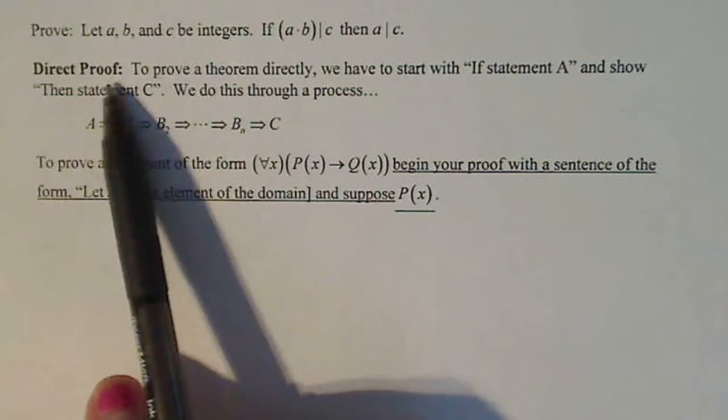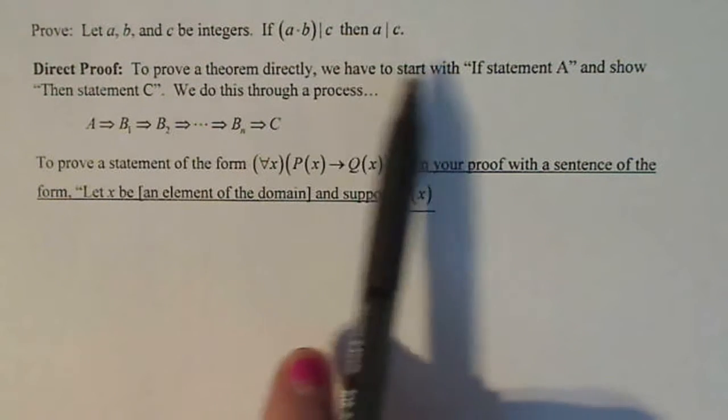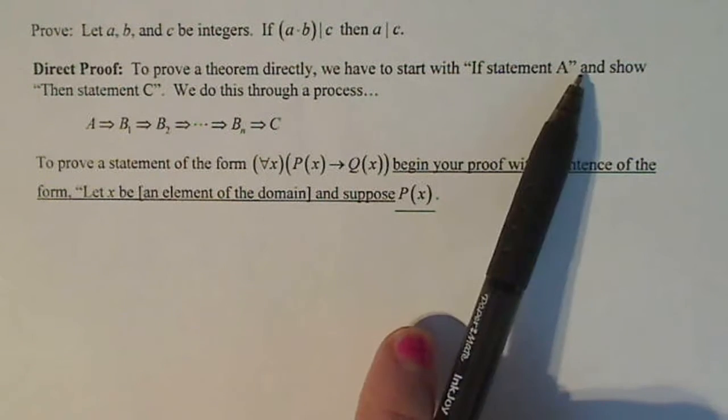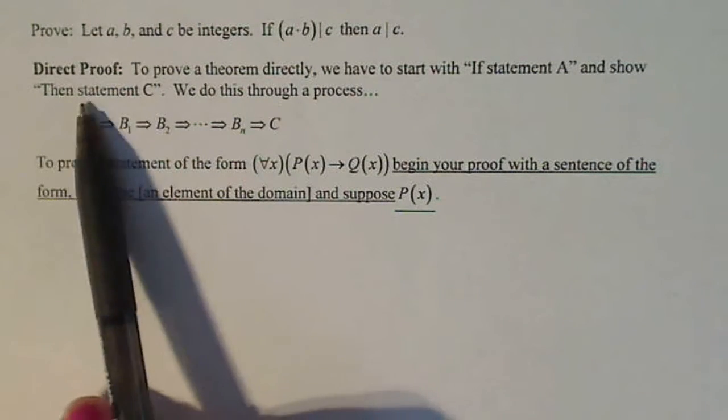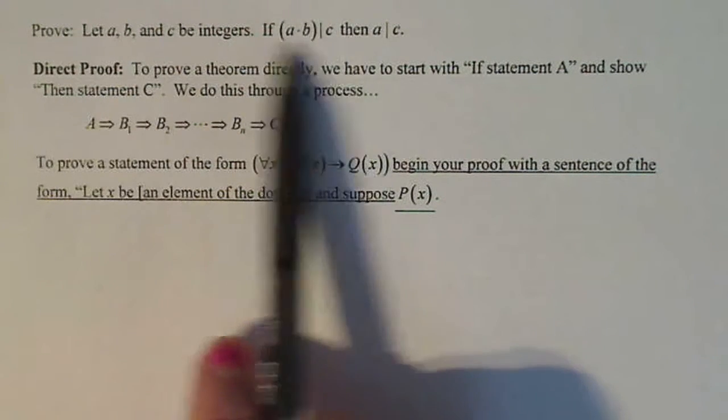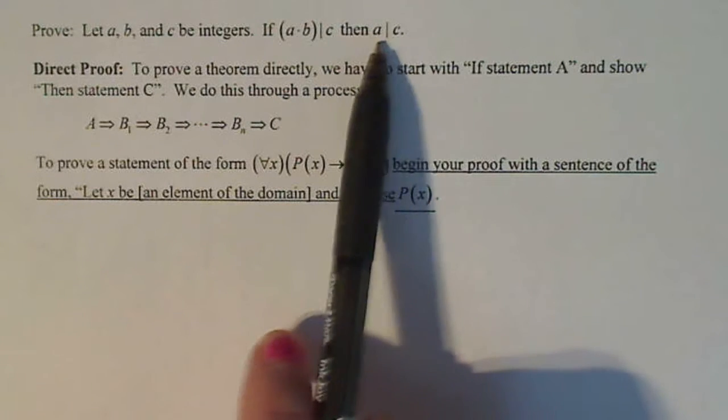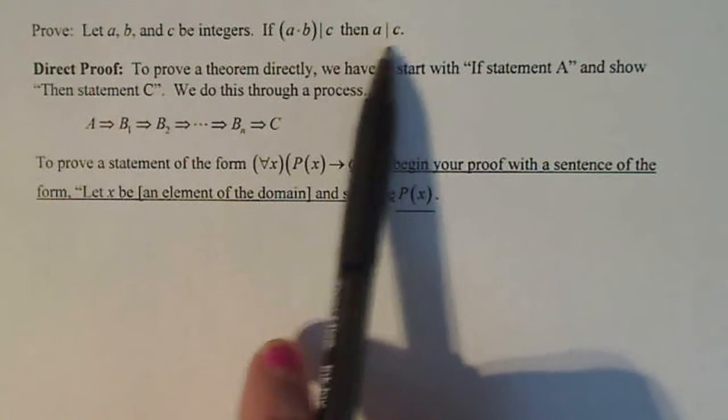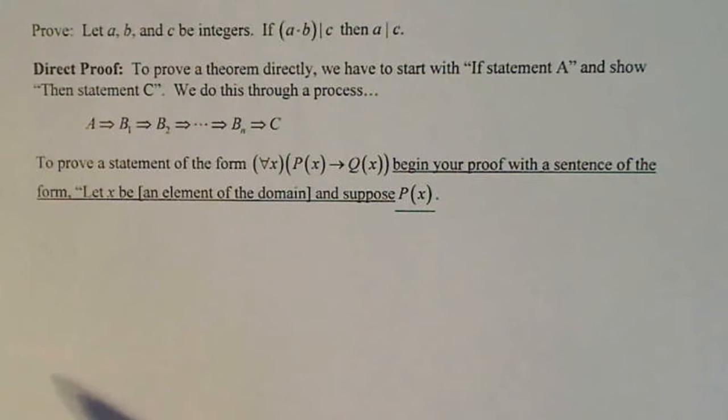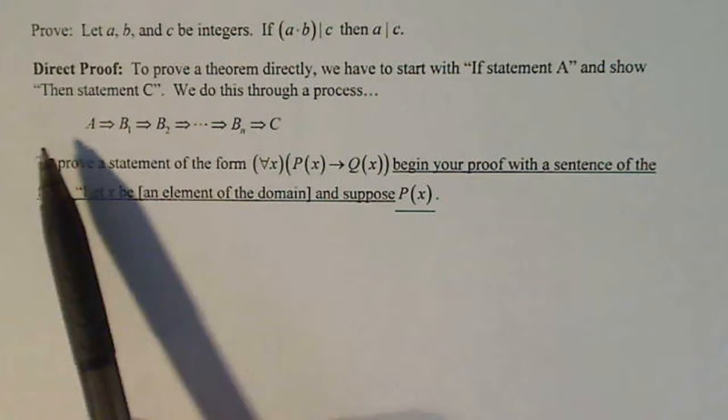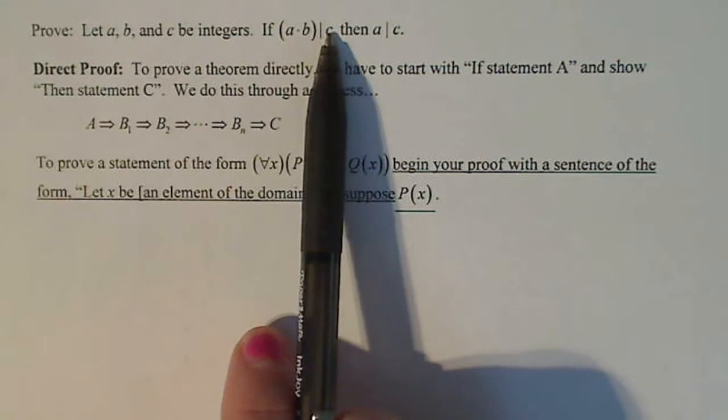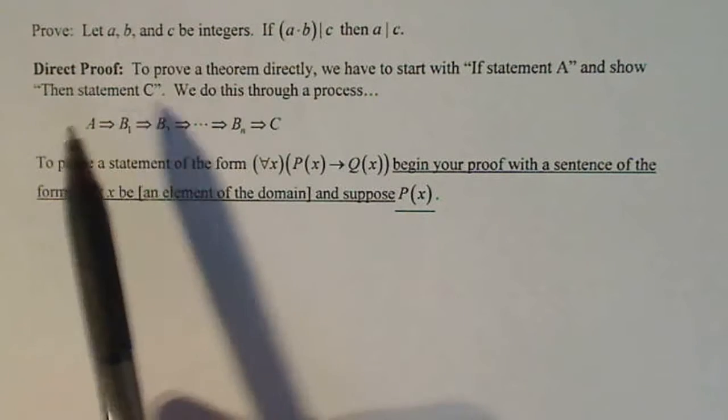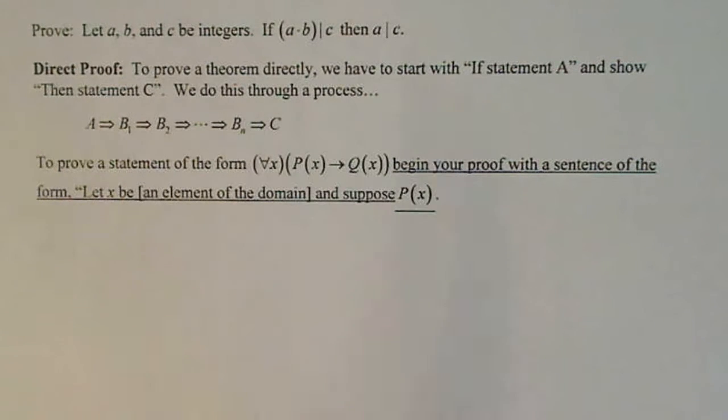A direct proof says to prove a theorem directly, we have to start with if statement A, which is this part right here, and show then statement C. So I'm going to start out with this and at the very end of the proof conclude with this. This should not show up until the very end of the proof. We do this process by starting here, thinking about what that all means, and then coming out with a dividing c in the end.